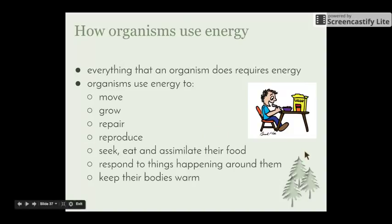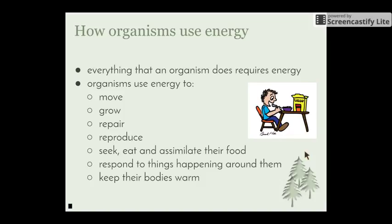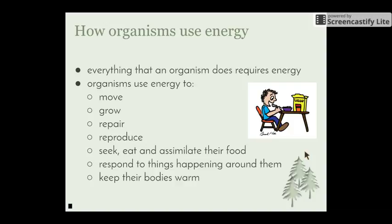Lastly, a quick summary of how organisms use energy. Everything that an organism does requires energy, whether obtained through photosynthesis in plants or through the food they eat in animals. They use this energy to move, grow, repair any damage, reproduce, seek and assimilate their food, respond to things happening around them, and to keep their bodies warm. That brings us to the end of this video, leading nicely into the next section on food chains, food webs, and energy pyramids.